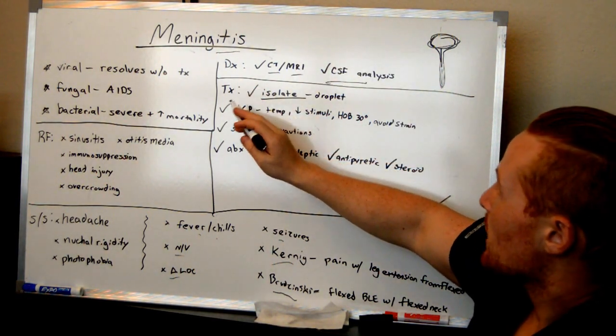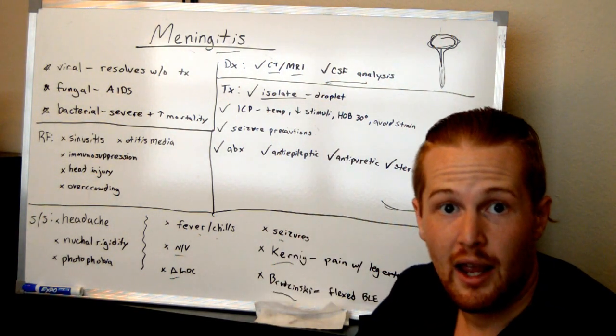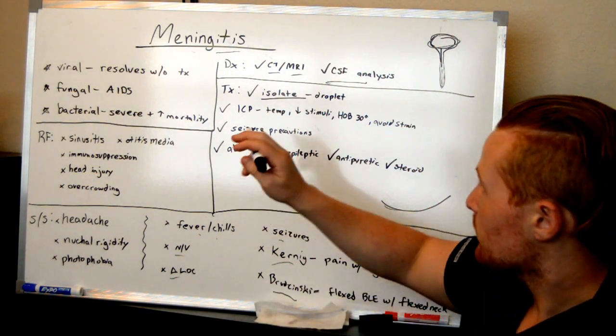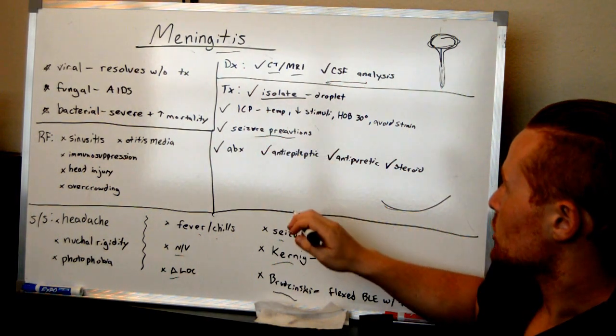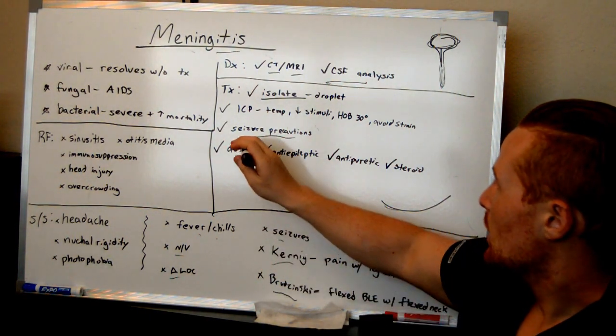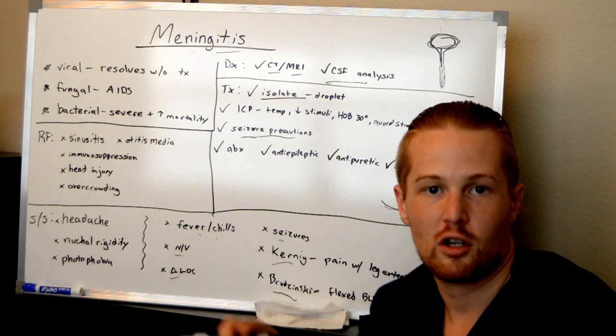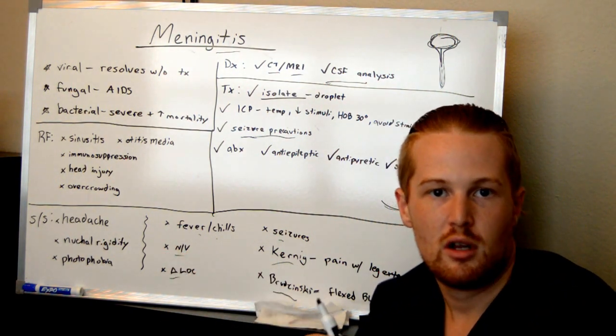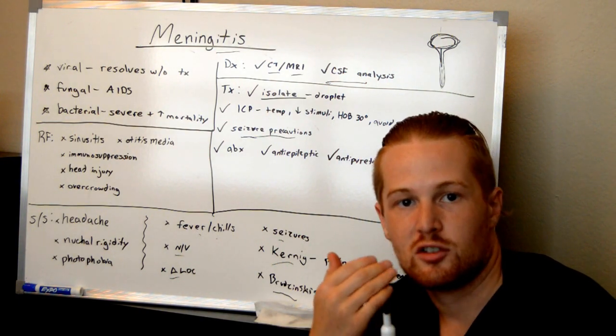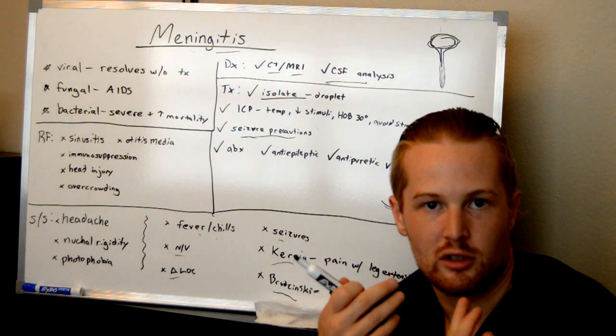So what do you do? For bacterial meningitis, droplet isolation. And this is because you don't want it to spread. Also, seizure precautions because they're at risk for seizures. And so you want to pad the beds to make sure if they were to hit their head on any of the rails, they're padded with a blanket. It's not going to hurt them as much. And you'll have suction right by in case they're drooling during a seizure or anything.